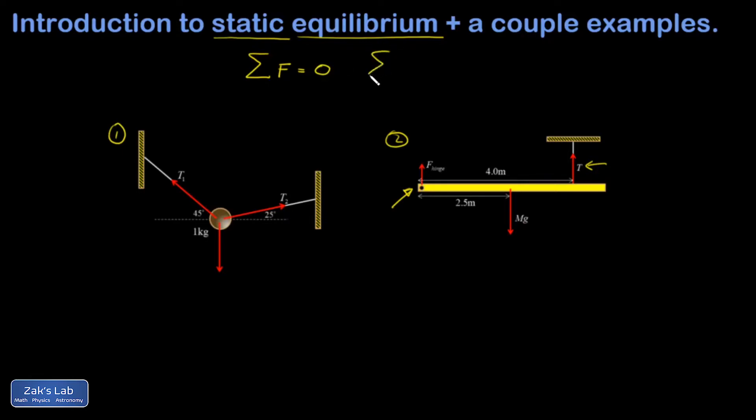Secondly, even if the net force is zero, you can imagine a case where something started spinning because the net torque wasn't zero. So I need the net torque to be zero so the object doesn't start spinning.